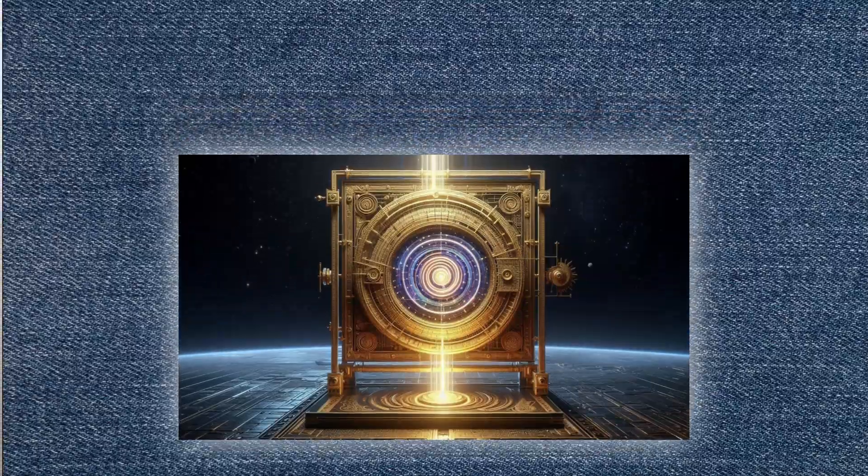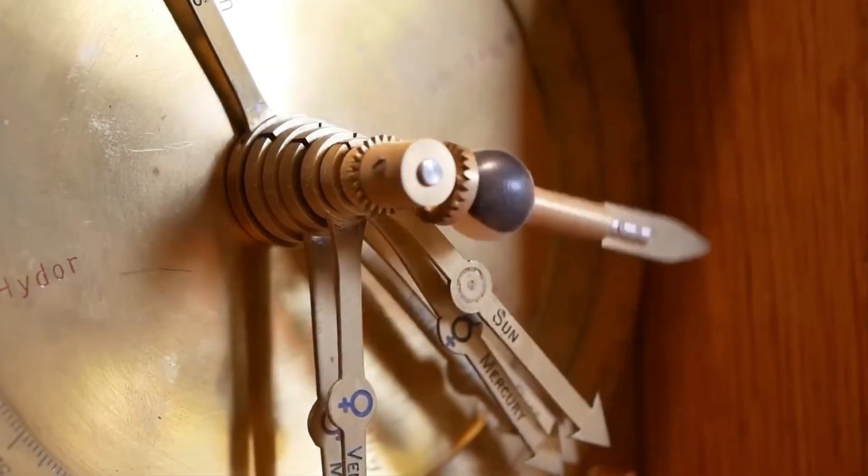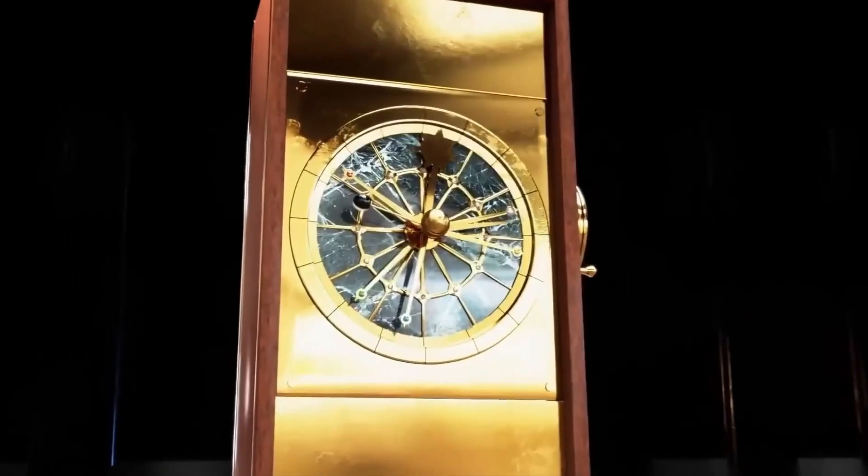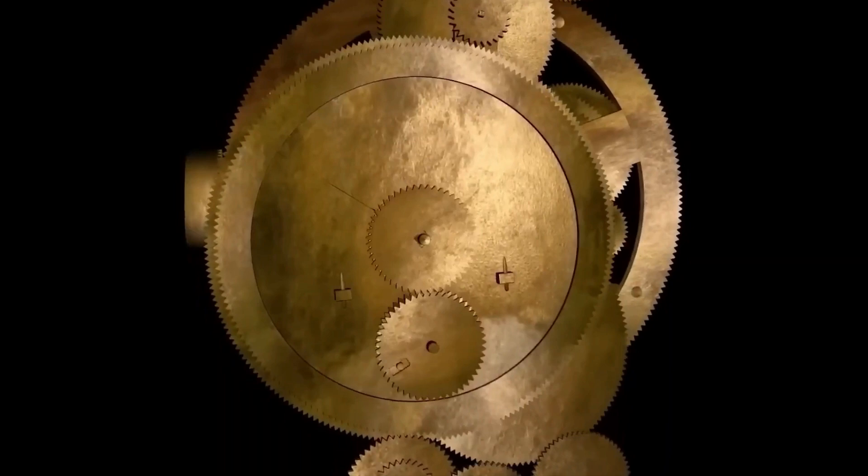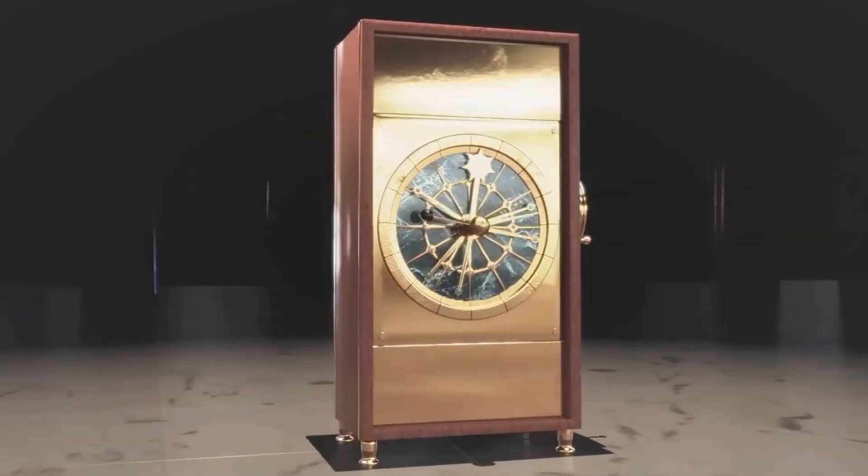The Antikythera mechanism is a compact device, measuring about 34 by 18 by 9 centimeters, roughly the size of a shoebox. It contains at least 30 bronze gears, with some estimates suggesting up to 69.